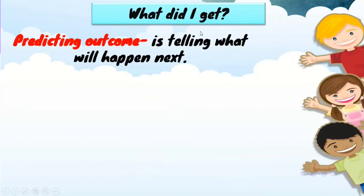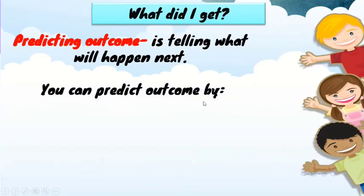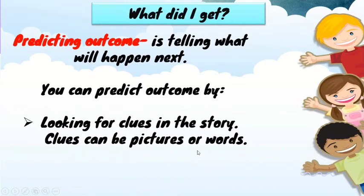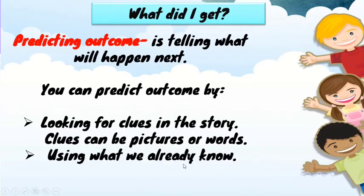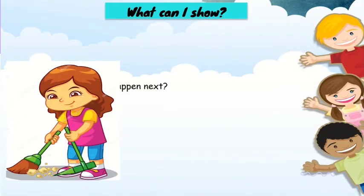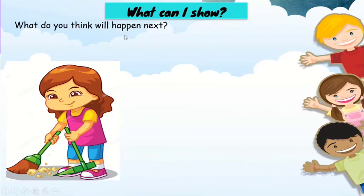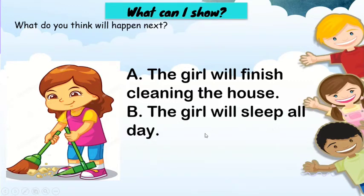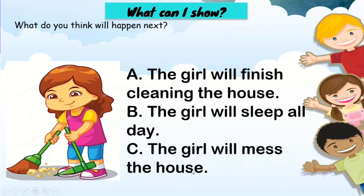What did I get? Predicting outcome is telling what will happen next. You can predict outcome by looking for clues in the story. Clues can be pictures or words, and using what we already know. That's how we predict outcome. Now, what can I show? What do you think will happen next? A: The girl will finish cleaning the house. B: The girl will sleep all day. C: The girl will mess the house. The answer is A: the girl will finish cleaning the house.